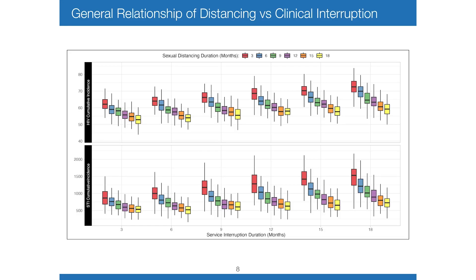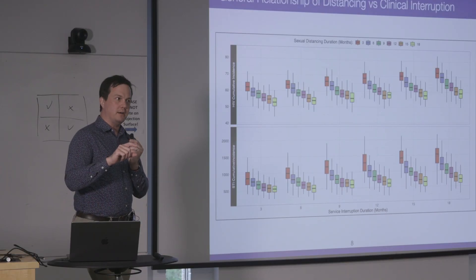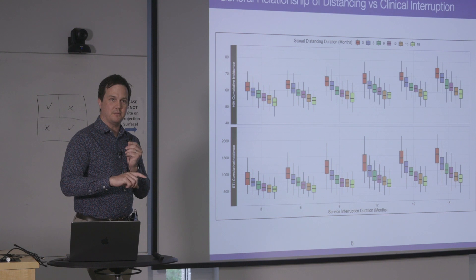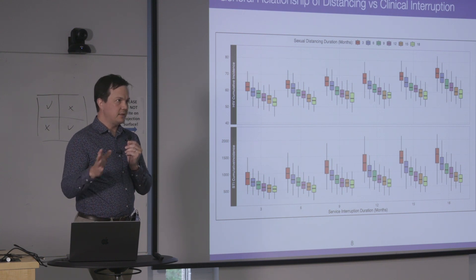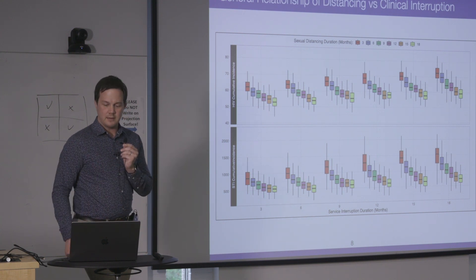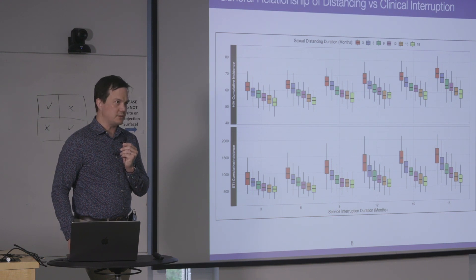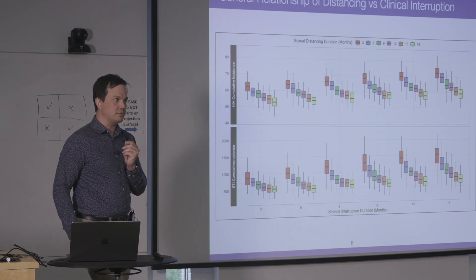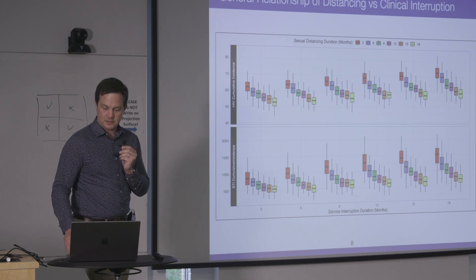Long story short, combining them in that blue line shows the longer-term impacts for HIV are minimal — they kind of stay at stationary 2019 levels. But there are bigger impacts for bacterial STIs, because the period of sexual distancing disrupts overall transmission dynamics. We also did exploratory scenarios looking at the timing of sexual distancing versus disruption to clinical services, mapping out all potential scenarios. This was in early 2021, so we still didn't know how long everything would last.